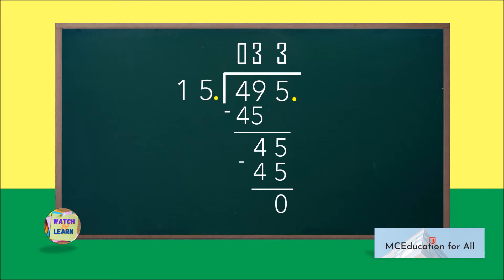Place the decimal point in the quotient in the same position as given in the dividend. But you can also omit or remove this decimal point if your final answer is a whole number. Thus, the quotient of 49.5 divided by 1.5 is 33.